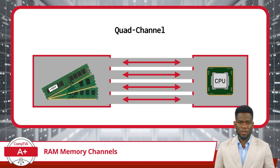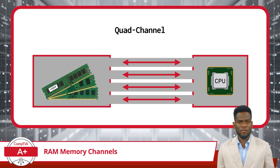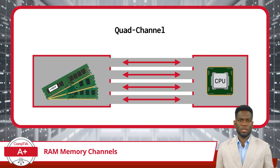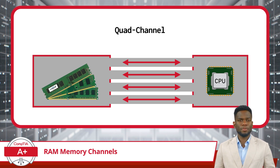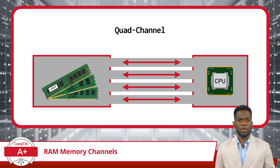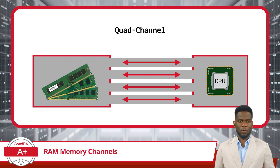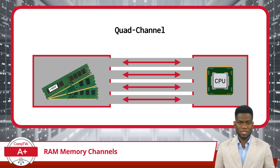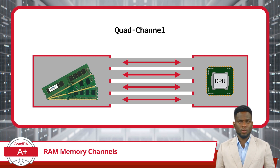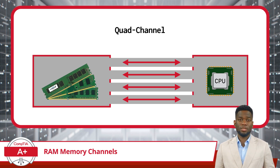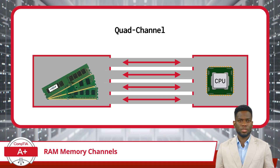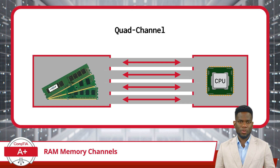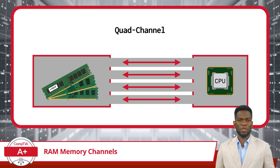Finally, we have quad-channel configurations. A quad-channel configuration stands as the epitome of efficiency in the world of memory, boasting four dedicated pathways or channels for data to seamlessly traverse between the CPU and RAM. This configuration can be pictured as an expansive four-lane highway. When identifying a quad-channel setup, it's important not to confuse it with a dual-channel configuration. In a quad-channel setup, you will typically observe a motherboard with RAM slots in multiples of four. These slots are strategically positioned and may or may not be color-coded depending on the motherboard's design. For instance, if there are eight slots, they may or may not be color-coded to indicate proper slot pairing for quad-channel operation, while a motherboard with only four slots may not utilize color-coding at all.